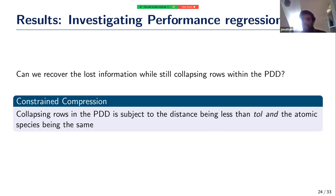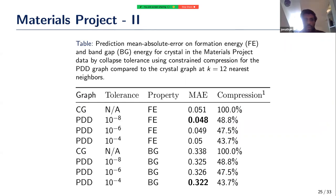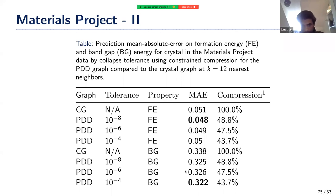Can we still do collapsing and retain good performance? Yes — we just need to add an additional constraint: when collapsing two rows in the PDD, they must not only be within the collapse tolerance, but the atomic species must also be the same. Redoing the experiment with this constrained collapsing, the PDD graph actually slightly improves on the MAE of the crystal graph while shrinking the graph to roughly less than half its size. Interestingly, for band gap energy this additional constraint has less effect.